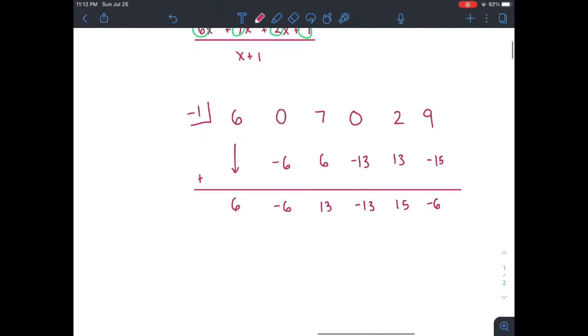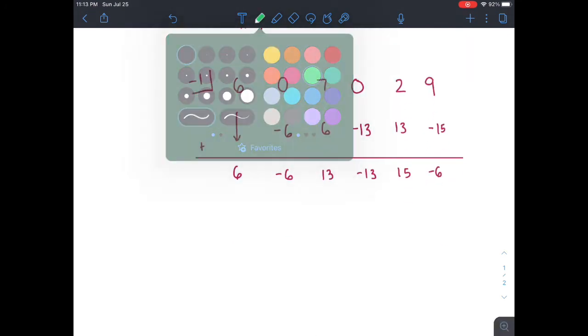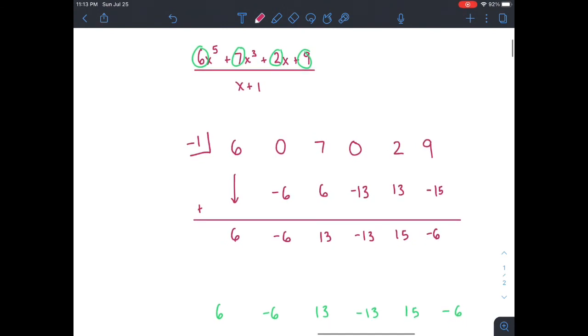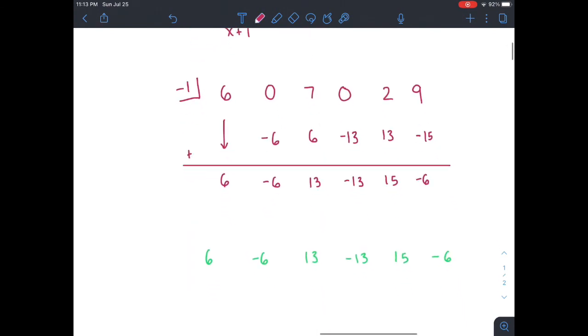So now we have our coefficients. We can write those in first. And now all we have to do is fill in our terms. And the terms will always be 1 less than the original coefficient here. So it would just be 6x to the 4th minus 6x cubed plus 13x squared minus 13x plus 15 minus 6 over x plus 1. And that is our final answer.